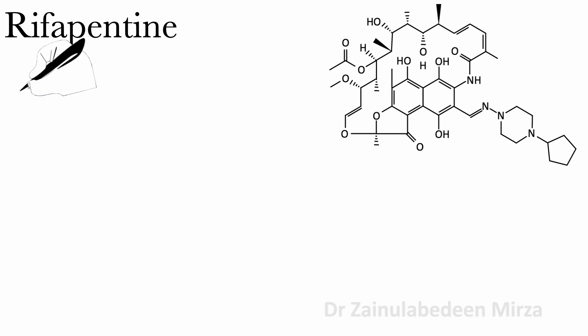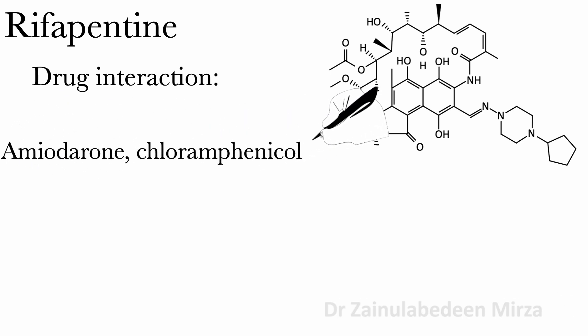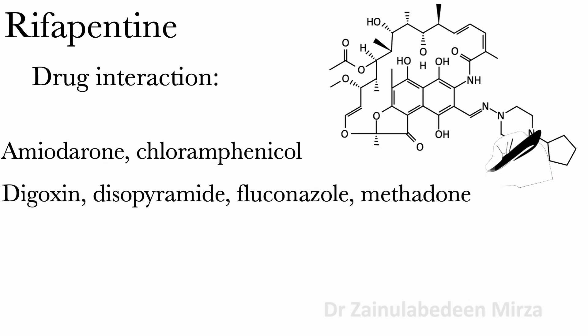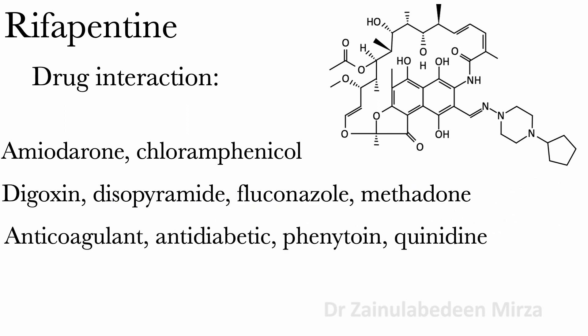There are drug interactions of using Rifabutine: Amiodarone, Chloramphenicol, Digoxin, Disopyramide, Fluconazole, Methadone, Anticoagulant, Antidiabetic, Phenytoin, Quinidine, Verapamil — these may decrease the effect of these drugs.